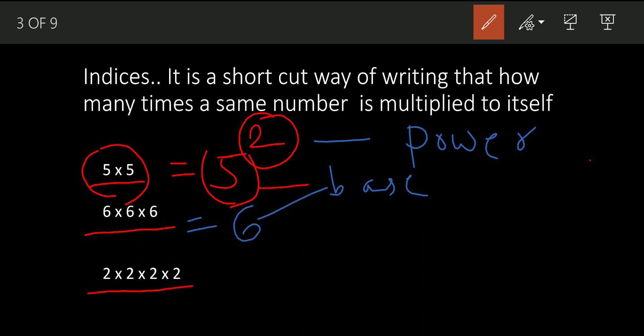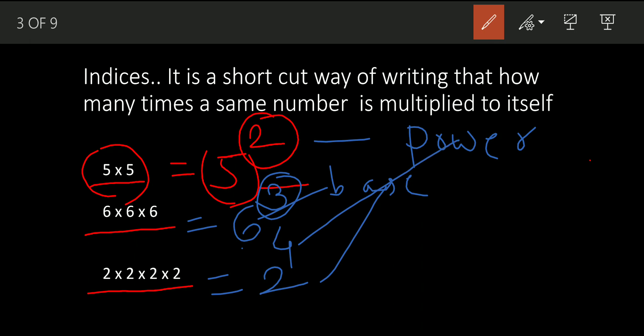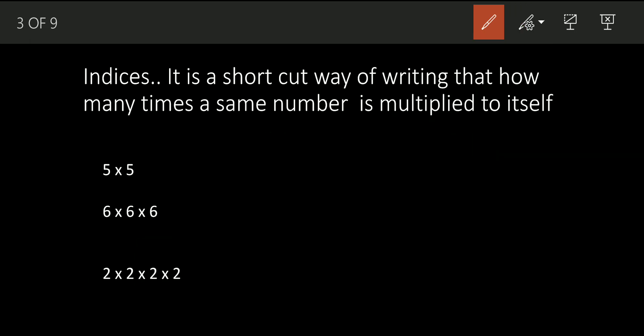In this case, how do we write this? We write six as the base and three as the power — it means we have multiplied this number three times. Here, two is the base and four is the power, meaning we have multiplied two four times.